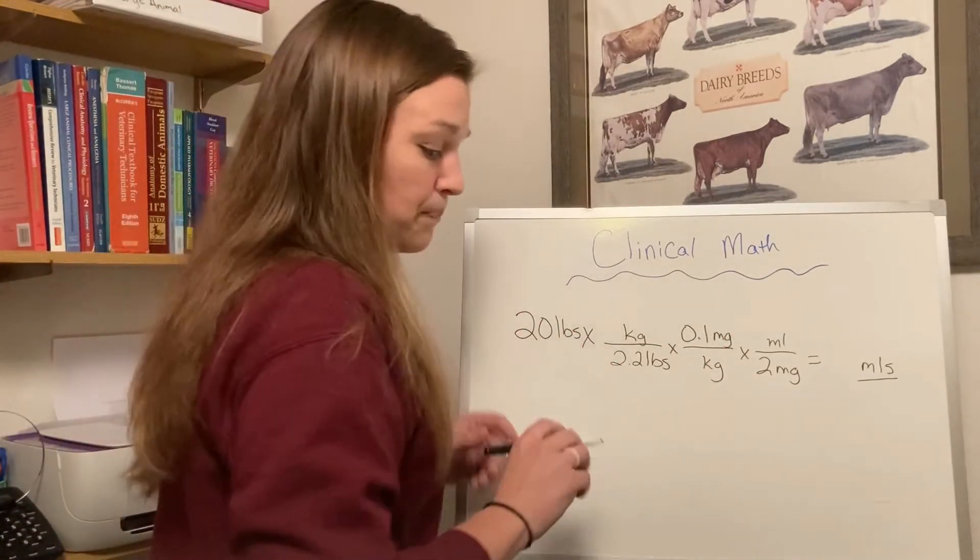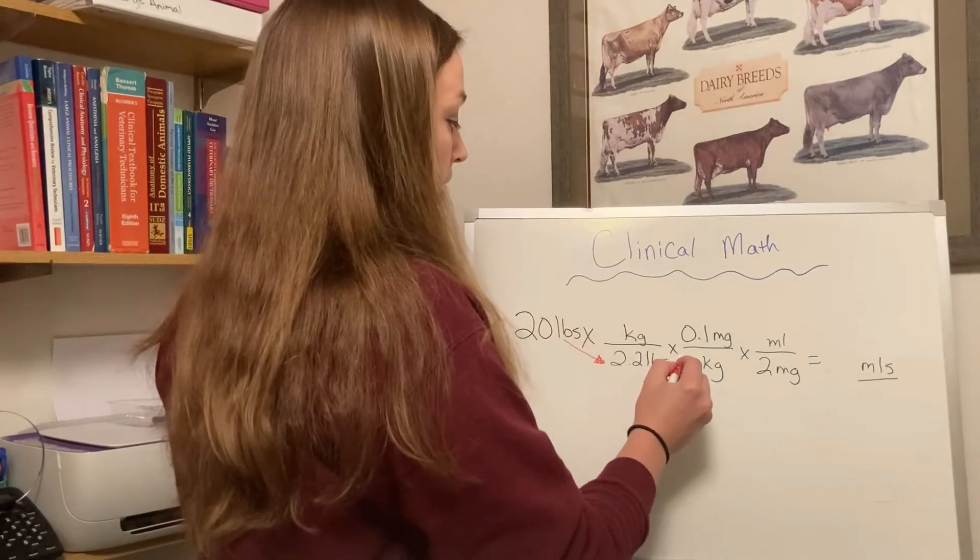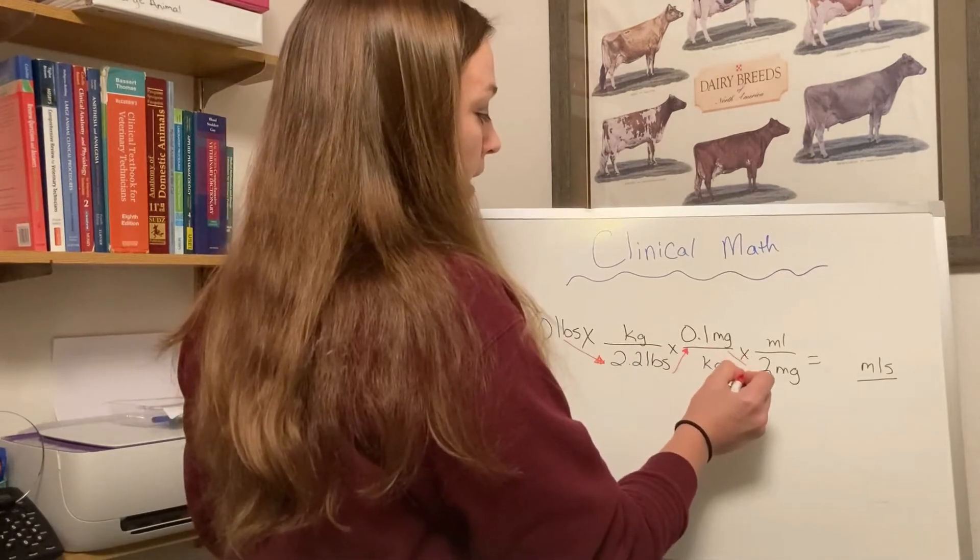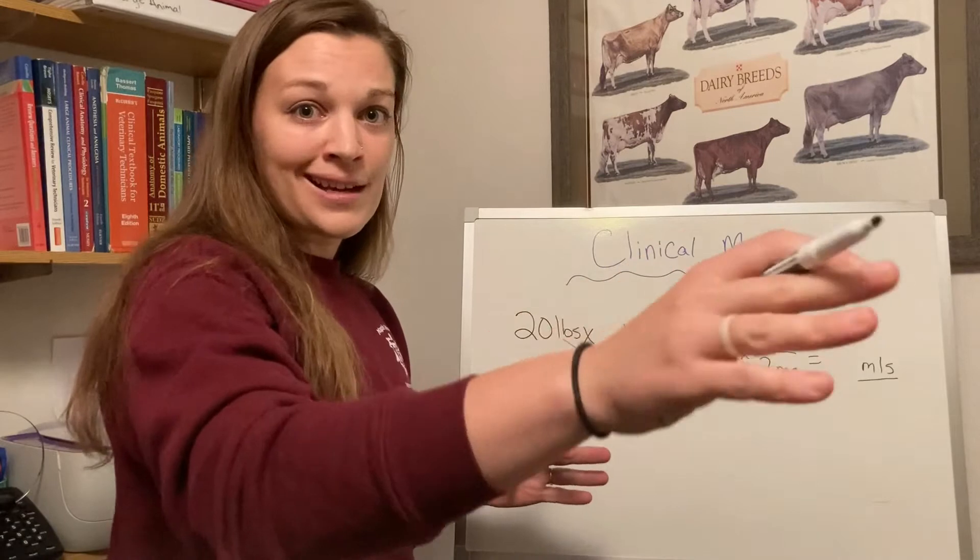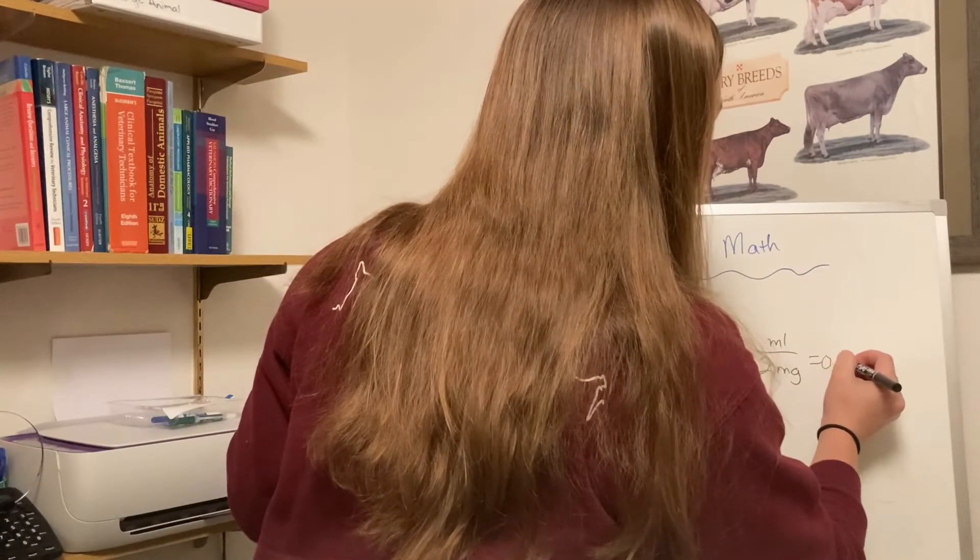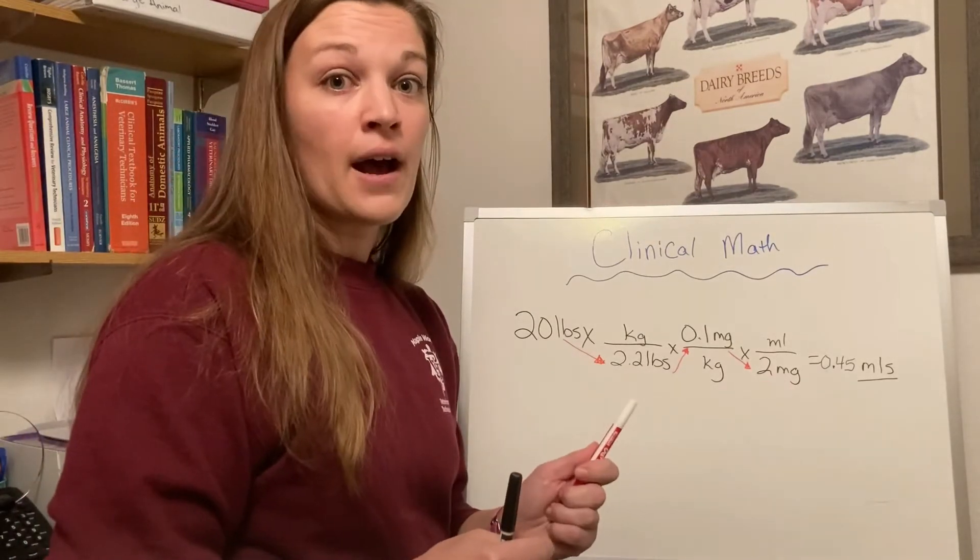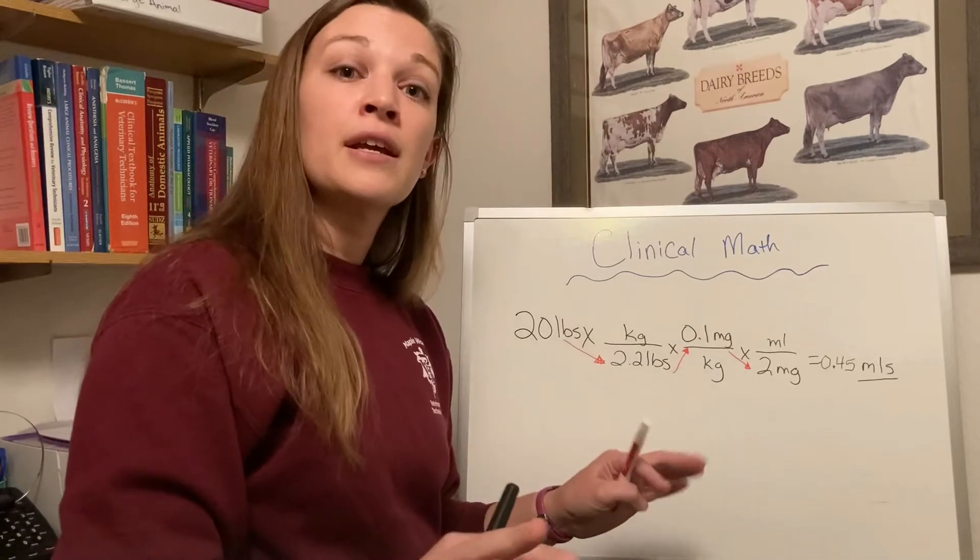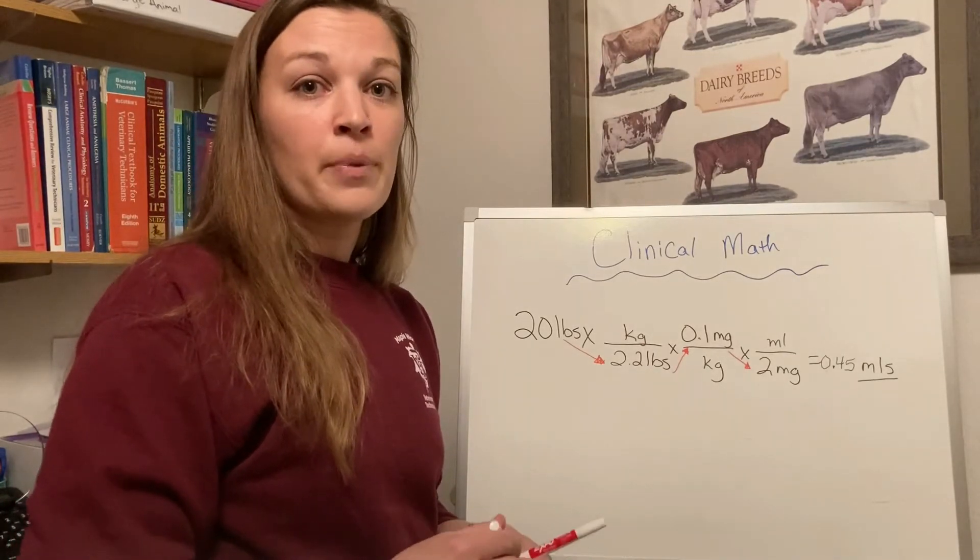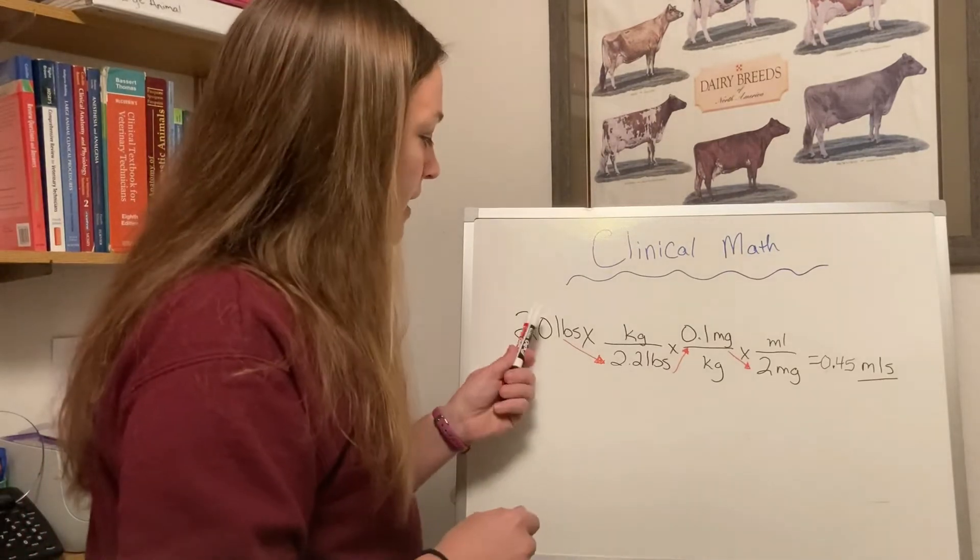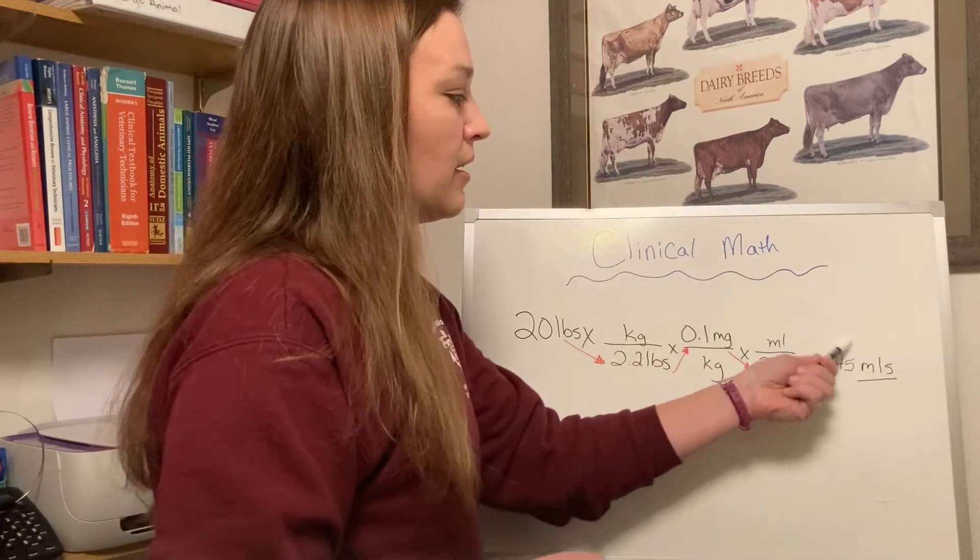How that works is we're going to, in our calculator, plug in our 20, then hit divide by 2.2, then hit times 0.1, then hit divide by our 2. And then our number at the end is 0.45 and then lots of numbers. What we're going to do with that is just go out to the number that you can draw up in a syringe. So if we have a one mL syringe, it is possible to draw up 0.45, so we're going to just cut it off right there. No rounding involved. No rounding at any point in these equations and getting into that habit will make things safer for your patients in the long run, especially the smaller ones. This is how we look at it in real life and not broken down. It's big number divided by 2.2 times 0.1 divided by 2 and then we get our number.